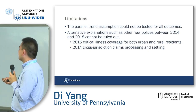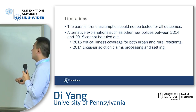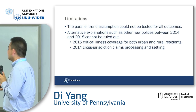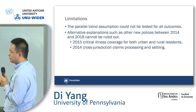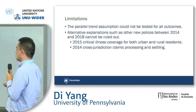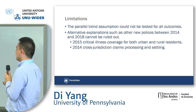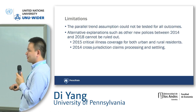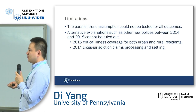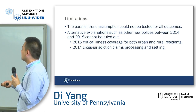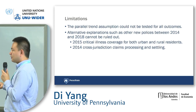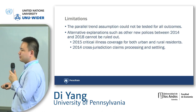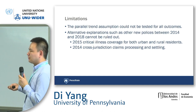The limitations are: first, the parallel trend assumption can only be tested for total medical expenditure, not for reimbursement and out-of-pocket. Second, there could be other policy changes between 2014 and 2018 that we were not able to tease out. However, we can still say that between 2014 and 2018 the urban-rural gap did not reduce, and because we control for county fixed effects, we observe differences within the same county. We also have no reason to believe other policies would impact urban and rural residents differently.